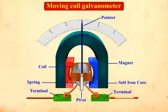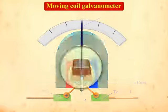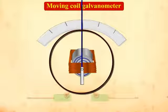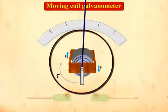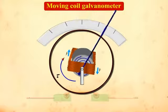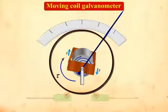In order to use the galvanometer, it is attached as you can see in the circuit. On switching the circuit on, the current flows through the circuit. A torque acts on the coil due to the magnetic field, and that causes deflection in the spring and therefore the pointer.